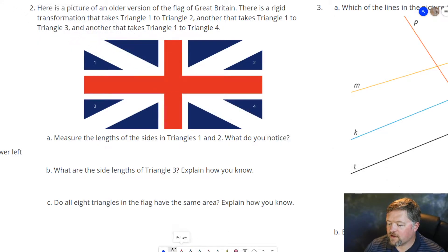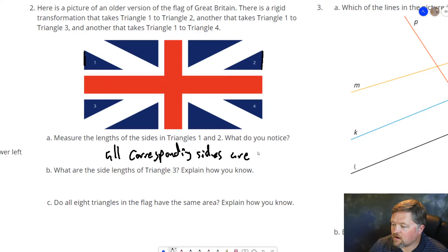Yeah, the ruler on here isn't great for that. But we know there was a rigid transformation that took 1 to 2, which means whatever this length is has to be equal to this length. This side here has to be congruent to this side here. This side here has to be congruent to this side here. I didn't mean to say all sides, I meant to say all corresponding sides are congruent. They have the same measurement.